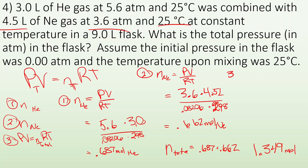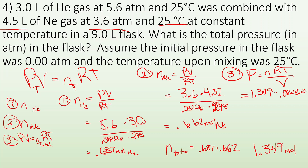Now my last step — PV = nRT again, solving for the final pressure: P = nRT/V. Total moles 1.349 times R = 0.08206 times temperature 298 K, all over volume 9.0 liters. I end up with 3.7 atmospheres as my final answer.